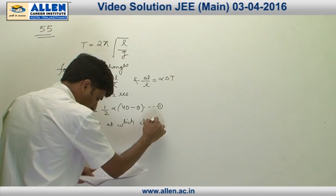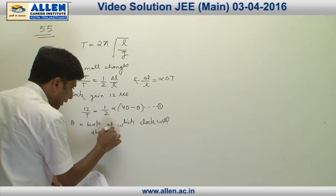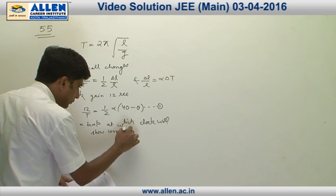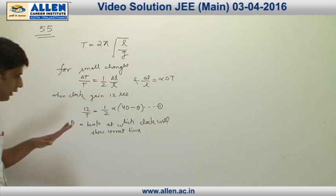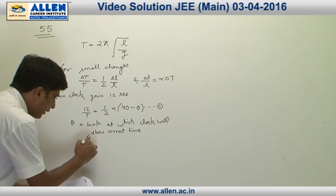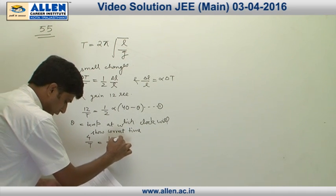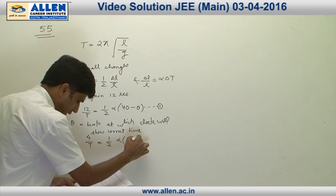In the same manner, in the second case we get that 4/T equals to half α(θ - 20), equation number 2.